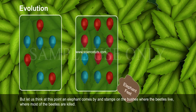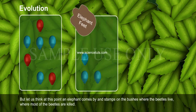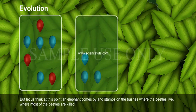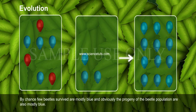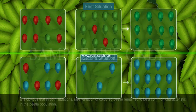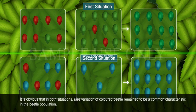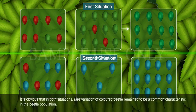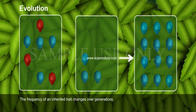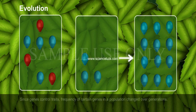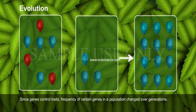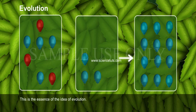But let us think — at this point, an elephant comes by and tramples on the bushes where the beetles live, and most of the beetles are killed. By chance, the few beetles that survived are mostly blue, and obviously the progeny of the beetle population are also mostly blue. It is clear that in both situations, a rare variation of colored beetle remained to become a common characteristic in the beetle population. The frequency of an inherited trait changes over generations. Since genes control traits, the frequency of certain genes in a population changes over generations. This is the essence of the idea of evolution.